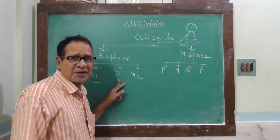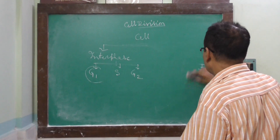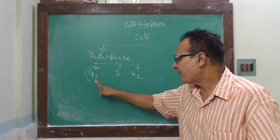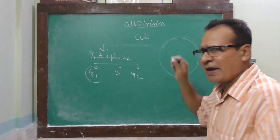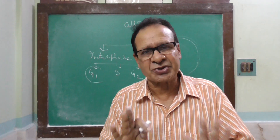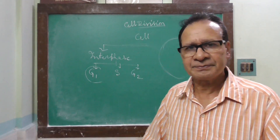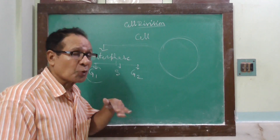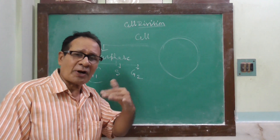After G1, a cell enters the S phase. Sometimes, the progress of the cell cycle stops at G1, and then the cell remains in a stationary condition — this is known as the G0 stage. If a cell enters G0, it cannot divide. This is seen in the human body, for example in neurons, which progress up to G1 and then enter G0 for their lifetime.